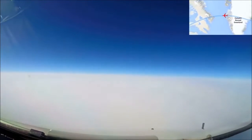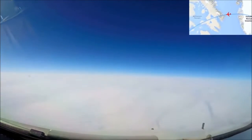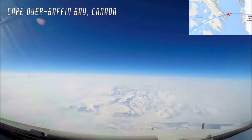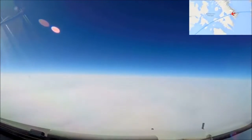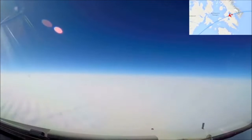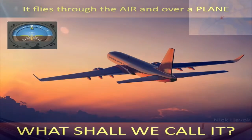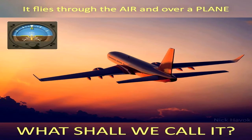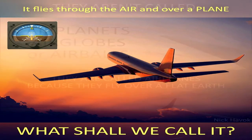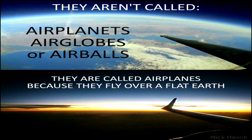In fact, that is why the horizon is named as such, because it is always perfectly horizontal. Likewise, the reason airplanes are named airplanes and not air globes is because they are flying over a level plane.